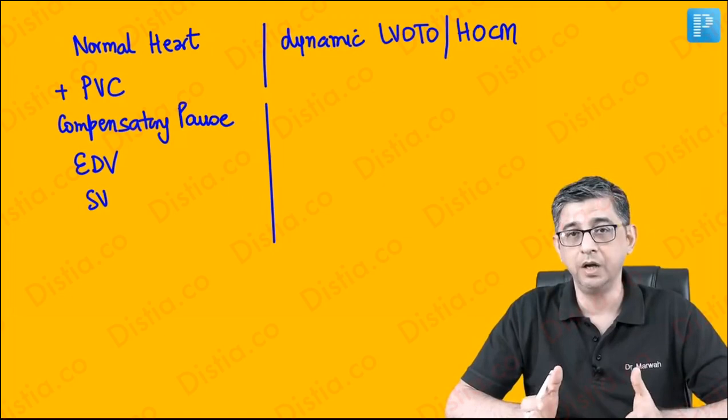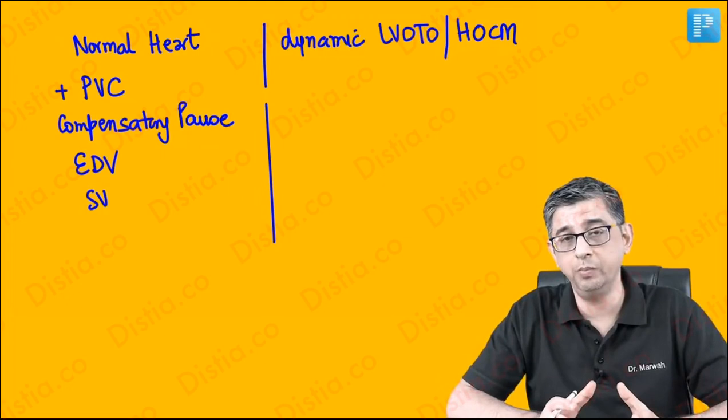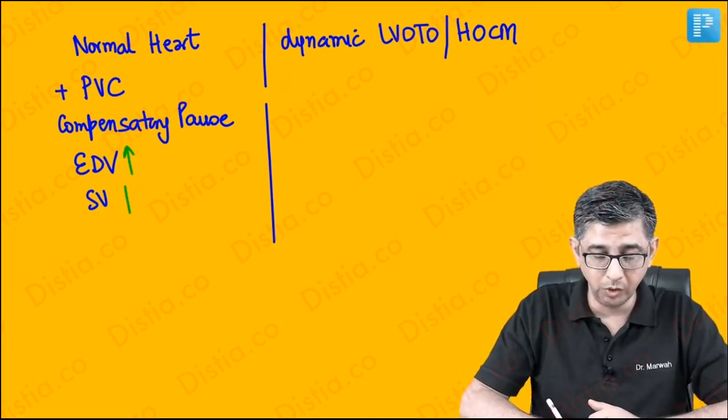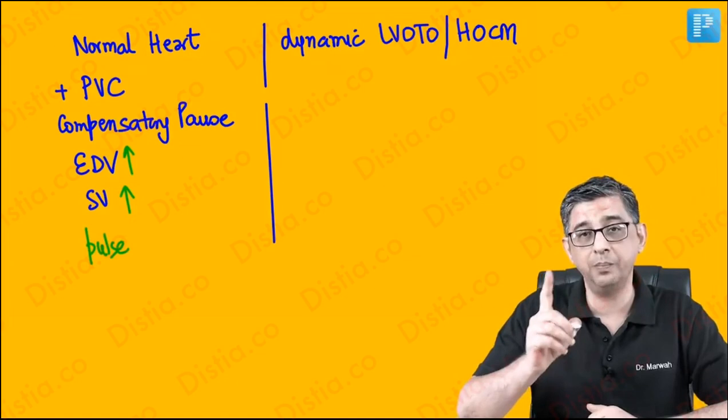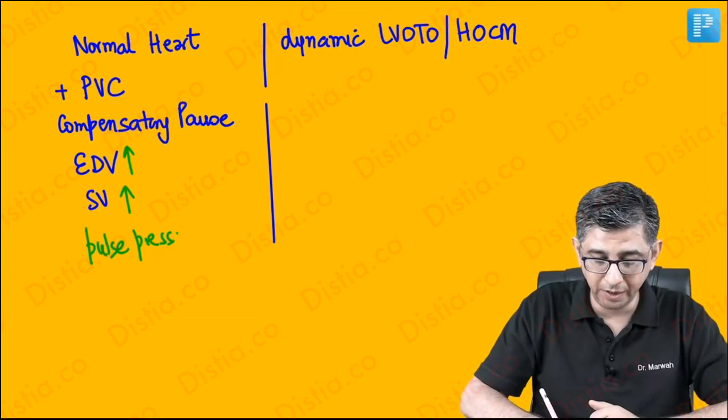In a normal person — without septal hypertrophy, without systolic anterior movement of the mitral valve — there will be an increase in end-diastolic volume. If the input is more, the output will also be more. So the message is: in a normal person after a premature ventricular contraction, the subsequent beat will have a relative increase in pulse pressure. That's pure physiology.